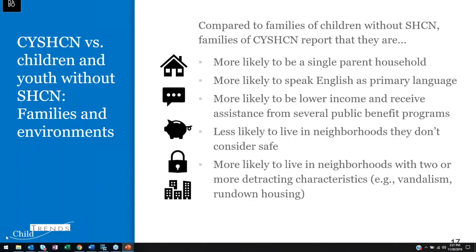We also looked at family-level outcomes. Comparing families of children with and without special healthcare needs, families of children with special healthcare needs tended to report being more likely to be in a single-parent household, more likely to speak English as a primary language, more likely to be in lower income and receive public benefit programs, and less likely to live in neighborhoods they considered safe. They were more likely to live in neighborhoods with detracting characteristics such as littering, rundown houses, and vandalism.